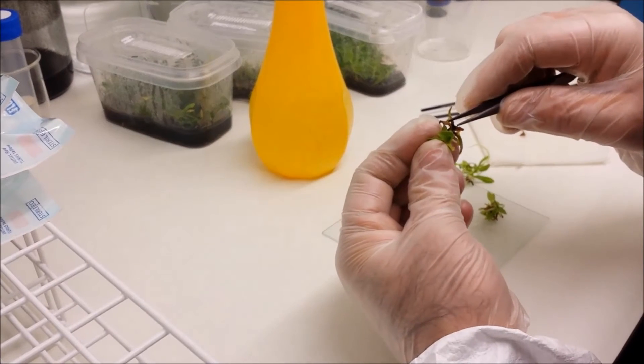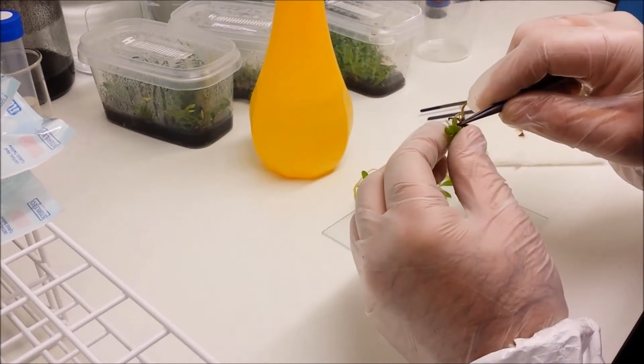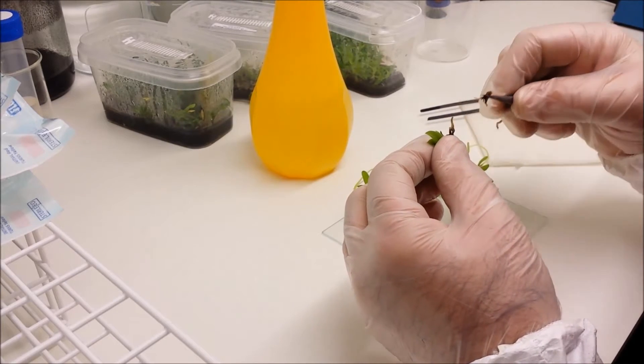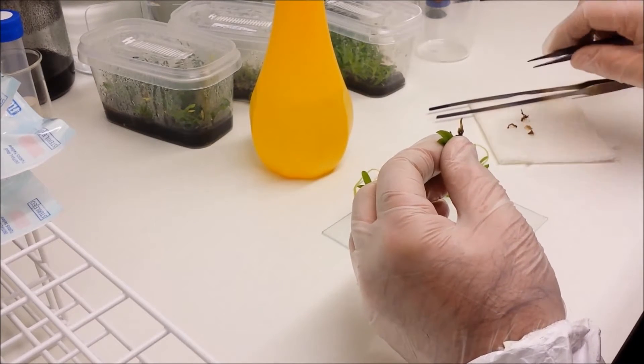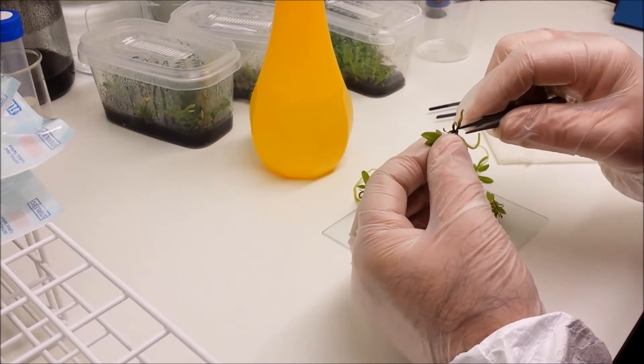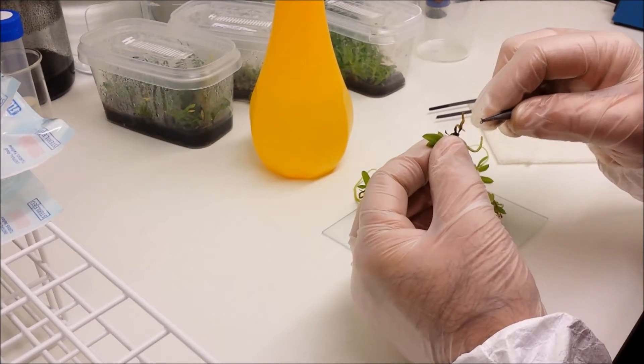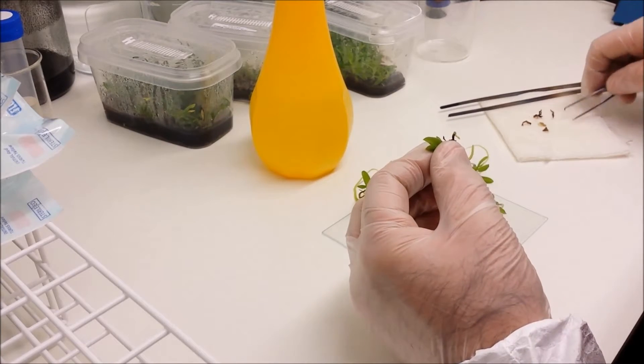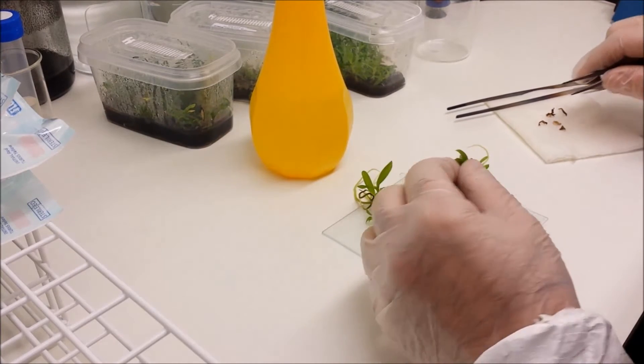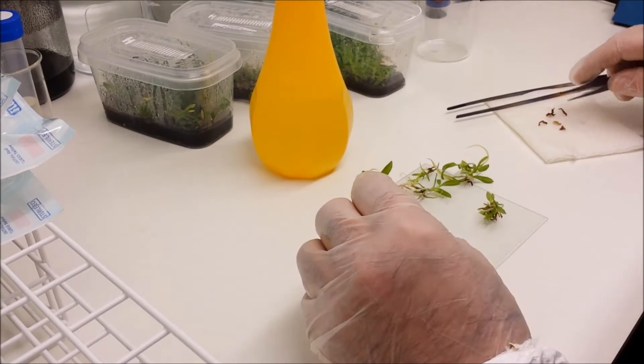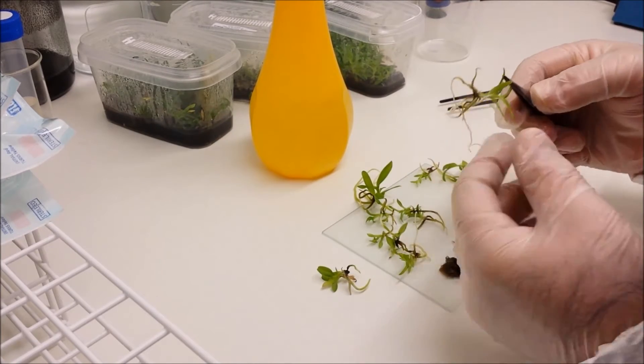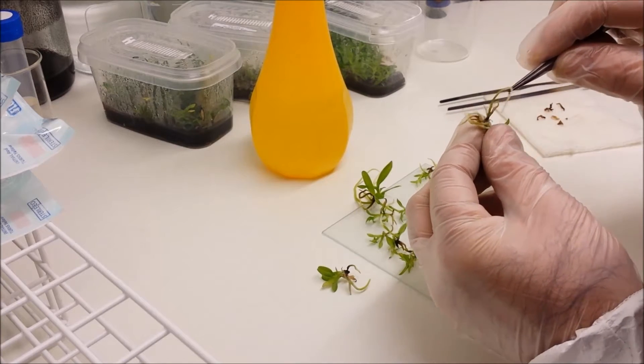Now what I'm going to be doing now is I'm using the fine tweezers to remove any dead bits. So you'll occasionally get little dead roots, dead bits of leaves. Really what I'm doing is I'm trying to remove anything that may become contaminated or cause a problem when we re flask it. There's no point starting off from a bad point. So the more you can tidy these little plants up the better.